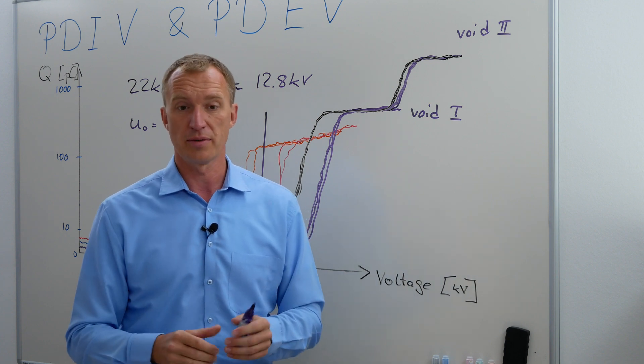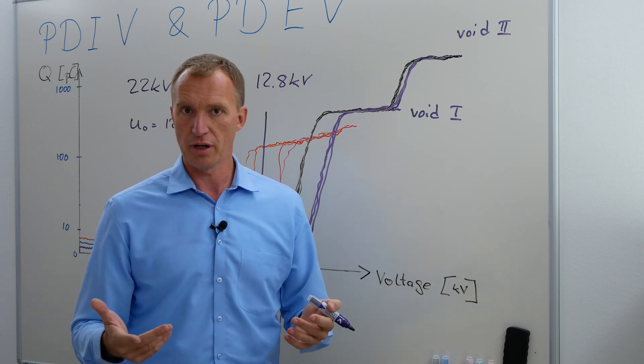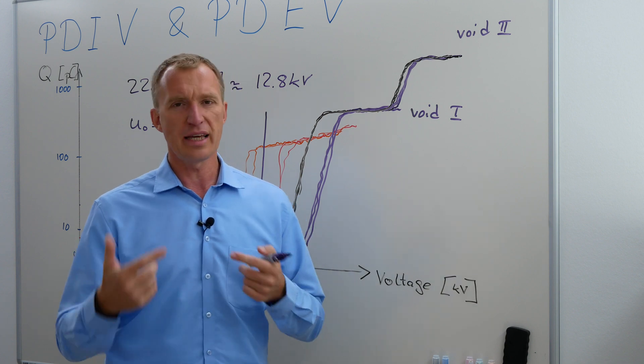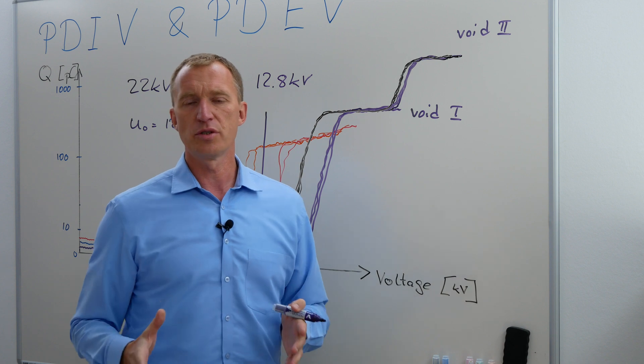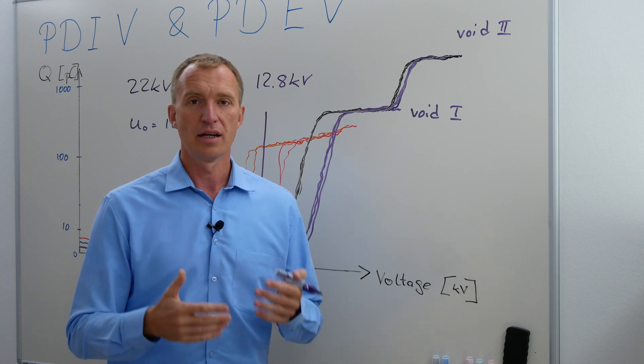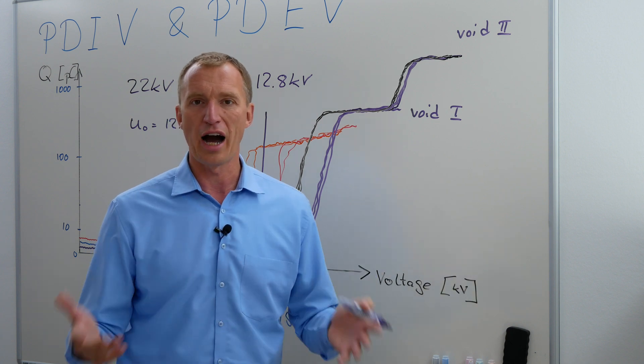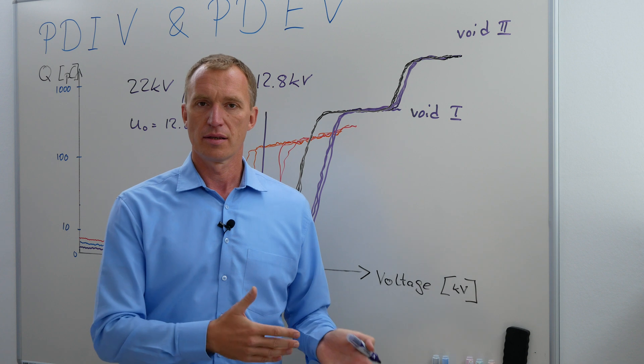So transients come usually from switching or from thunderstorms or from other things in the network. We're not going to talk about this right now but you have a very short over voltage and then this could trigger partial discharges. And if you keep in mind that there are cables who experience tens of transients per day, just imagine one of these transients, or one out of a hundred, triggers the service discharge.